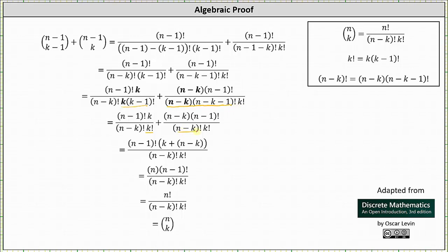Now notice how we have a common denominator, so we can go ahead and add the two fractions. Also notice how in the numerator we have a common factor of n minus 1 factorial. So we factor out n minus 1 factorial from the numerator, giving us n minus 1 factorial times the quantity k plus the quantity n minus k, with the denominator remaining the product of n minus k factorial and k factorial. Simplifying in the numerator, k plus the quantity n minus k simplifies to just n, leaving us with n times n minus 1 factorial in the numerator, which is just n factorial.